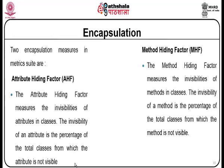The attribute hiding factor measures the invisibility of attributes in classes. The invisibility of an attribute is the percentage of the total classes from which the attribute is not visible. Method hiding factor measures the invisibility of methods in classes. The invisibility of a method is the percentage of the total classes from which the method is not visible.